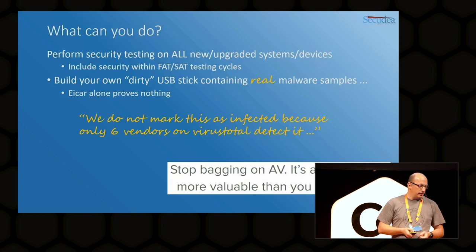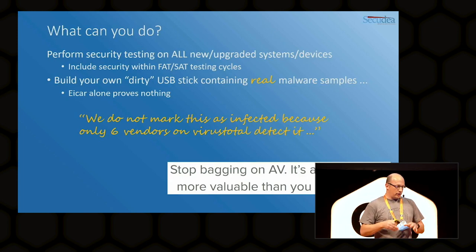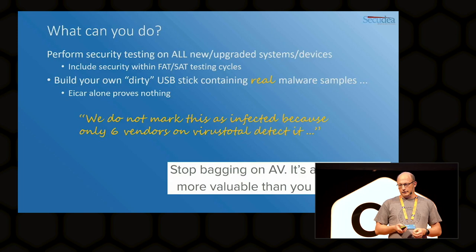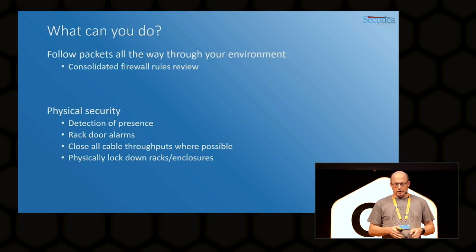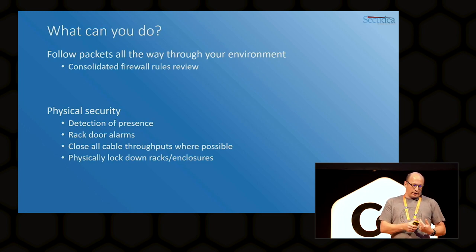To conclude: stop bashing antivirus. We saw during the game on Monday that antivirus really has its benefits, even in production environments — you can always catch the low-hanging fruits. Follow the packets all the way through your environment with a consolidated firewall rules overview. If you have multiple firewall layers, don't look at them one by one — look at everything consolidated. For physical security: detection of presence in server rooms, rack door alarms, close cable throughputs as tight as possible, and physically lock down racks and enclosures.